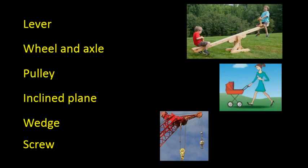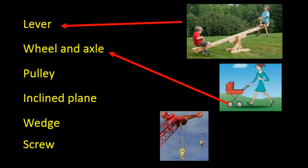First, at the top we see a teeter-totter, or you might call it a seesaw, and that would be an example of a lever. In the middle picture you see a woman pushing a buggy, and that is rolled by wheel and axles. Then the bottom picture shows examples of different pulley systems.